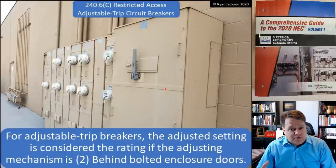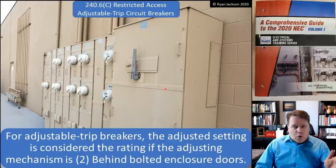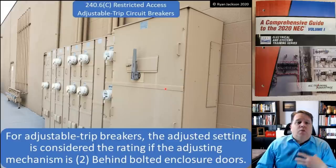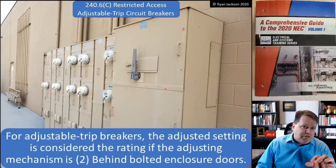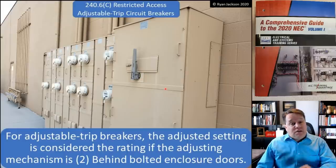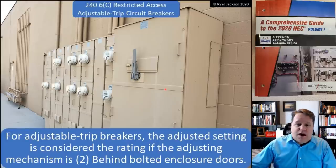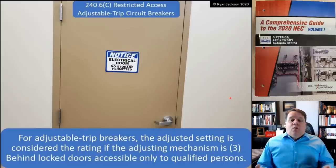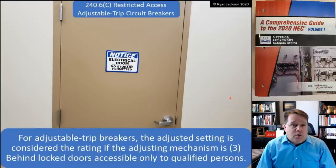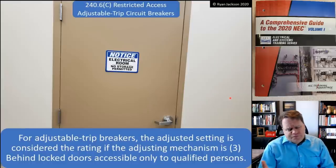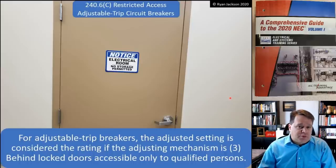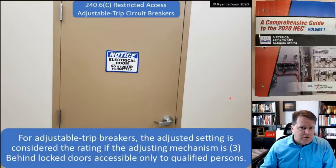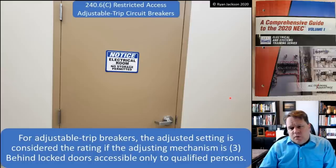Item two is if the adjustment mechanisms are behind enclosure doors — and you only need any one of these to be true to achieve restricted access. Usually when you buy an adjustable trip breaker it's behind a sealed cover, so you've already complied. Item three is having the equipment behind locked doors accessible only to qualified persons. Normally we meet all of the allowances, and you only need to have one of them.